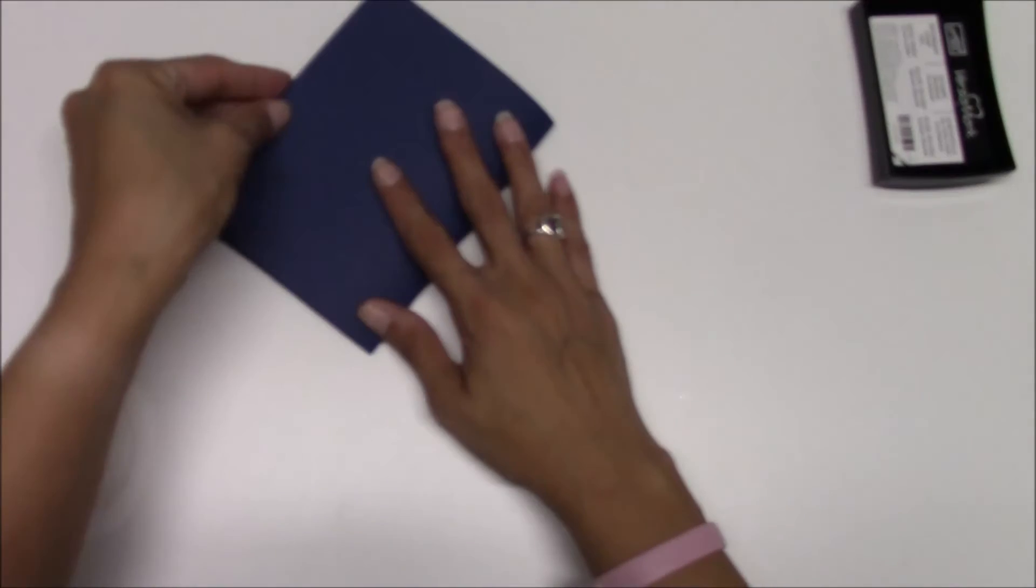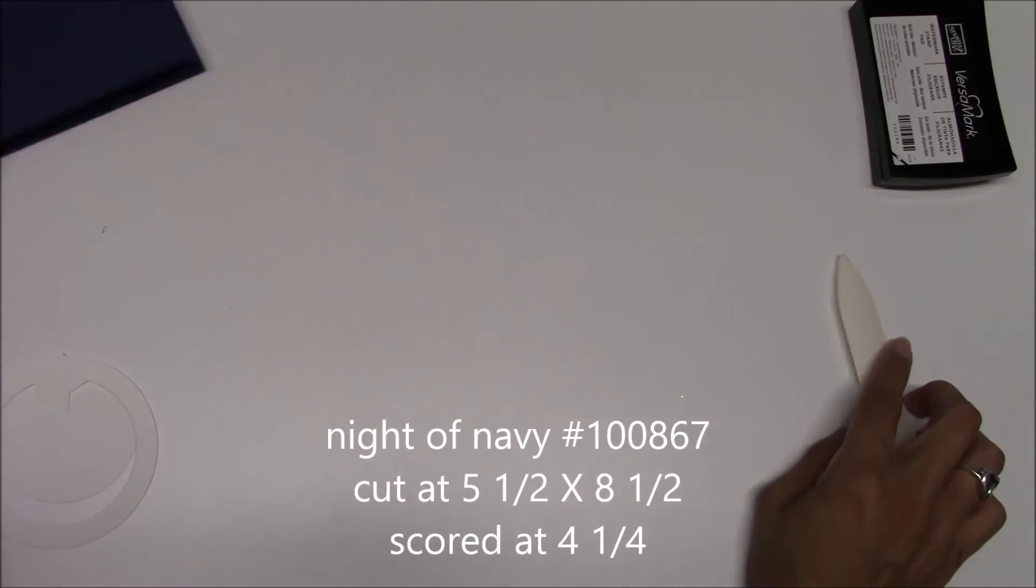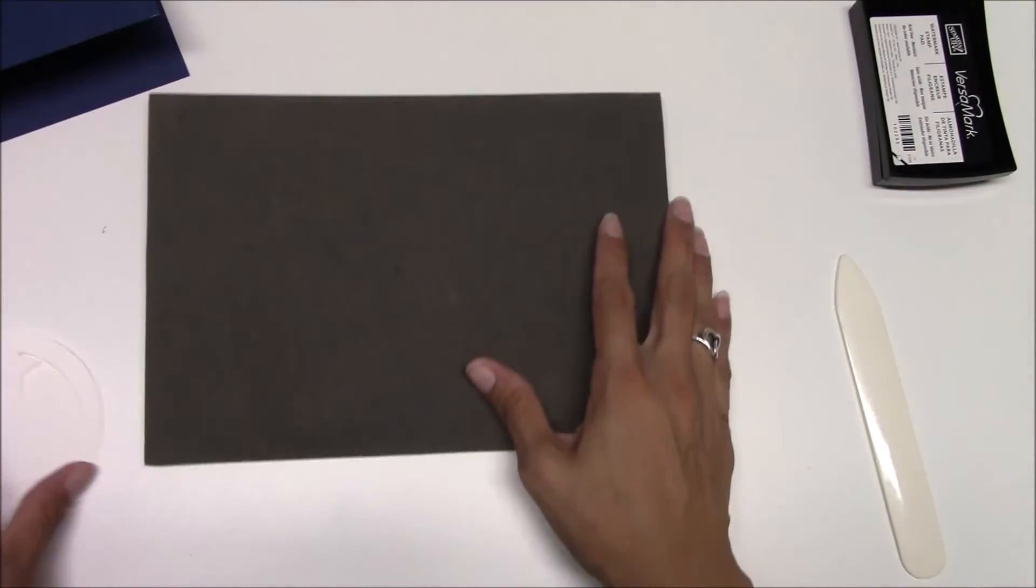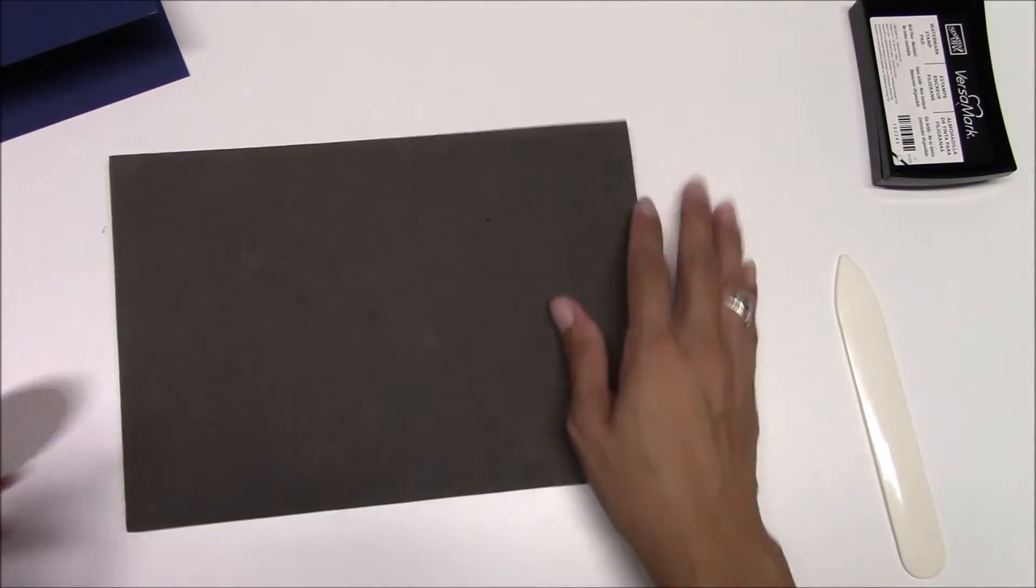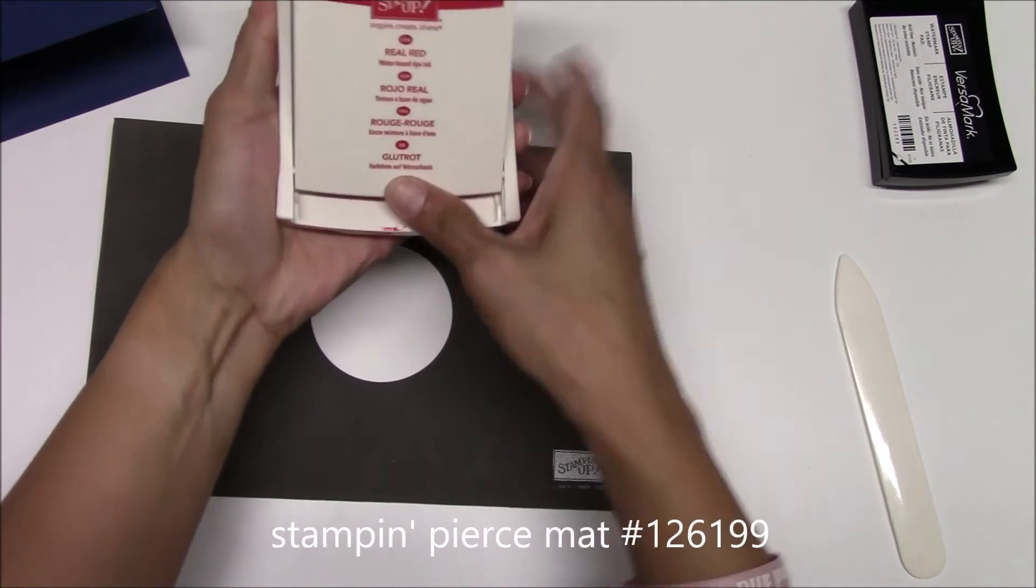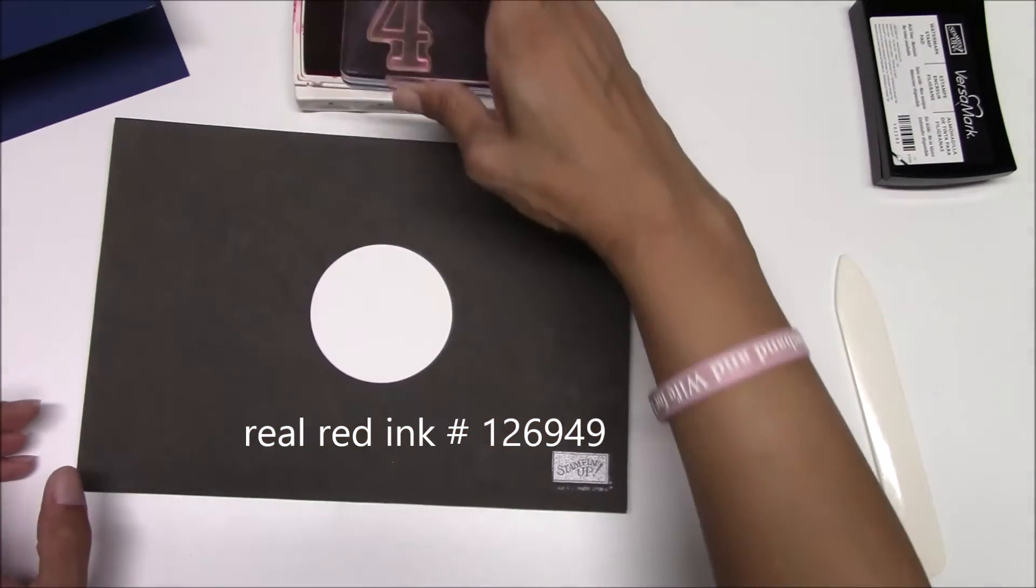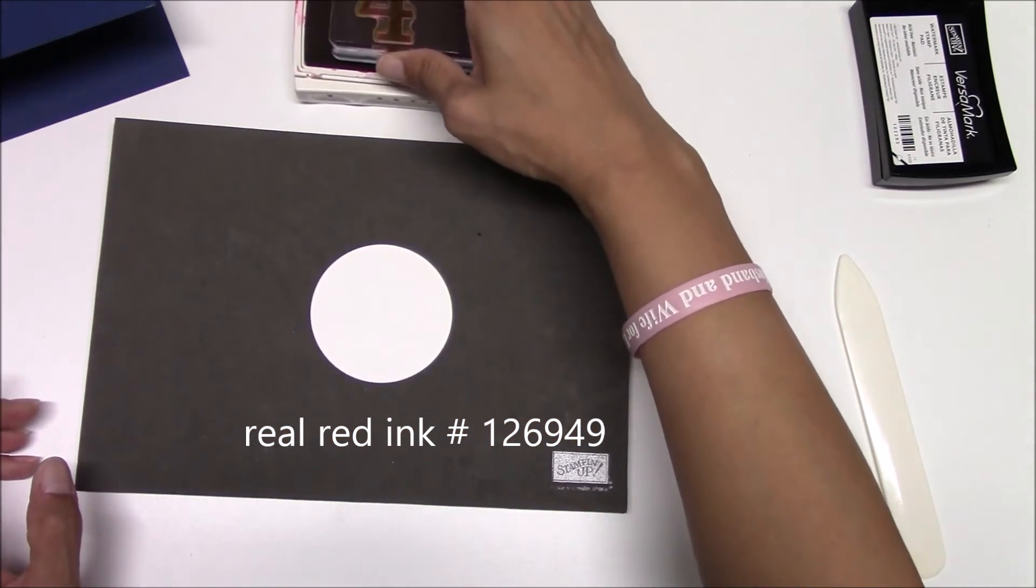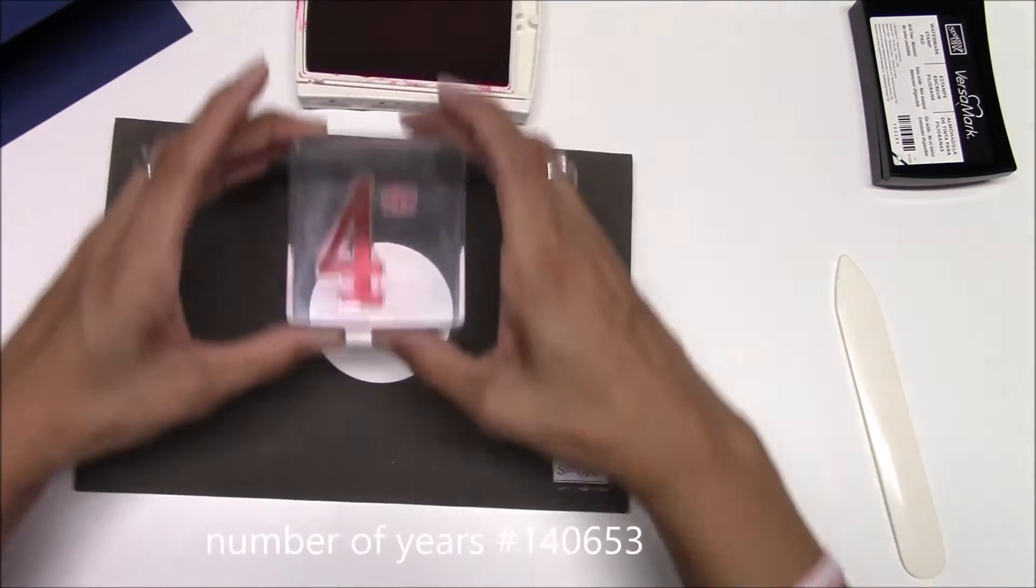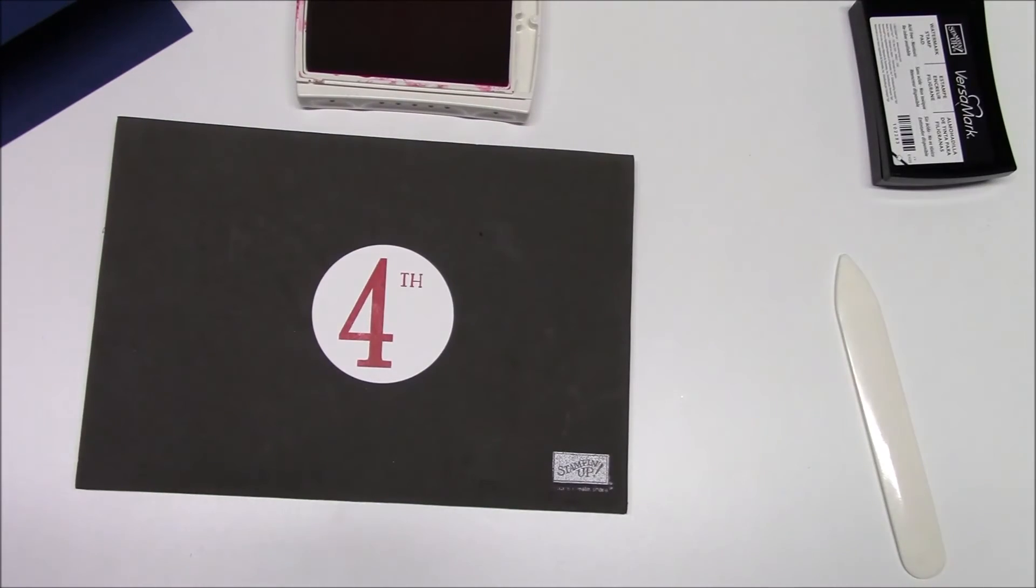Now I have my card base, and it's cut at 5½ by 8½, scored at 4¼. This is Night of Navy. Now we're going to start our stamping. We'll get the circle from the inside, and we're going to be using Real Red. We're going to use the fourth.